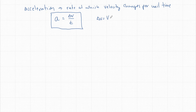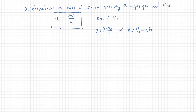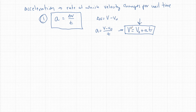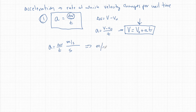We know that delta V is going to be V-final minus V-naught, or V-initial. So I can rewrite this as V minus V-naught over t. You'll see this written on your reference tables as V equals V-naught plus aT — that's just a derivation. So we're going to see the acceleration formula written in one of two ways: the traditional delta V over t, or V equals V-naught plus aT, which is easier to use because people hate fractions and you don't have to remember what delta V means.